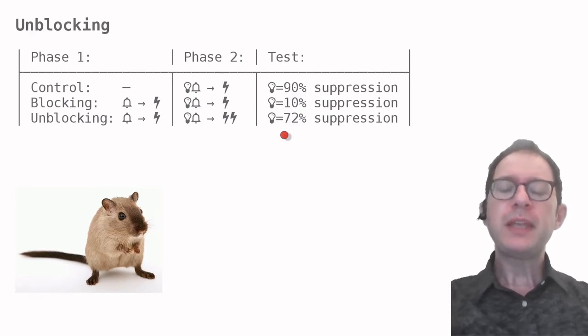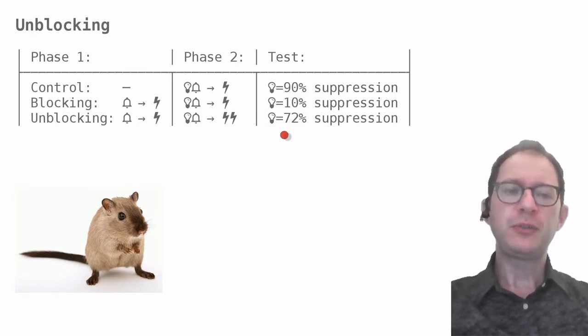So, being already afraid of the sound blocked learning about the light if the same shock was used in phase 1 and 2, but not if phase 2 employed a larger shock. Like with blocking, we will see a preliminary explanation of this result at the end of this lesson and a detailed explanation in a future lesson.